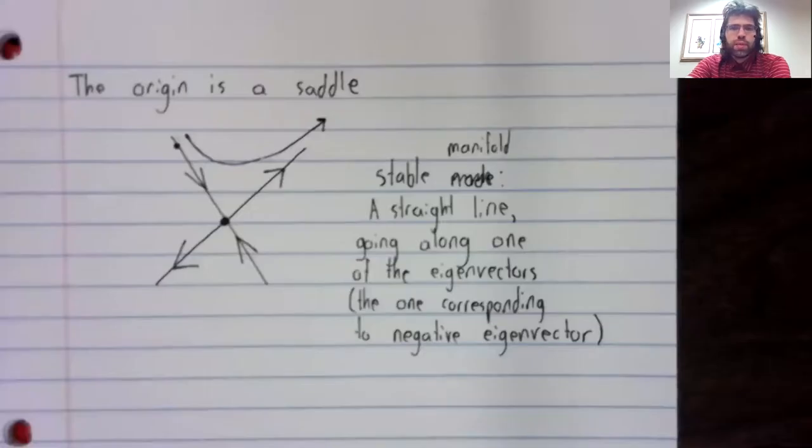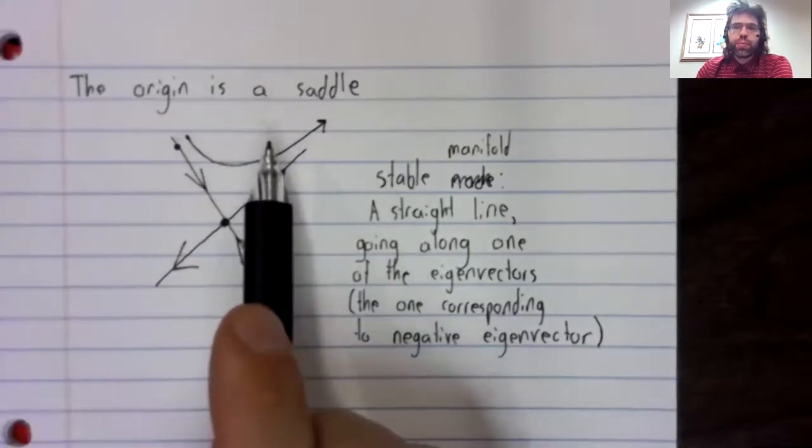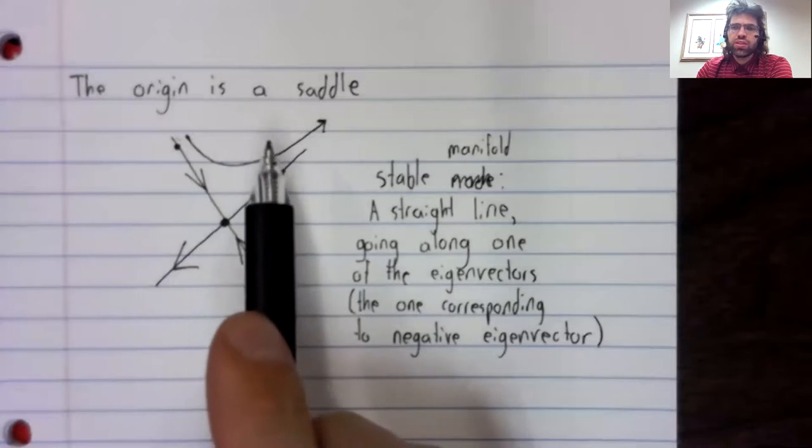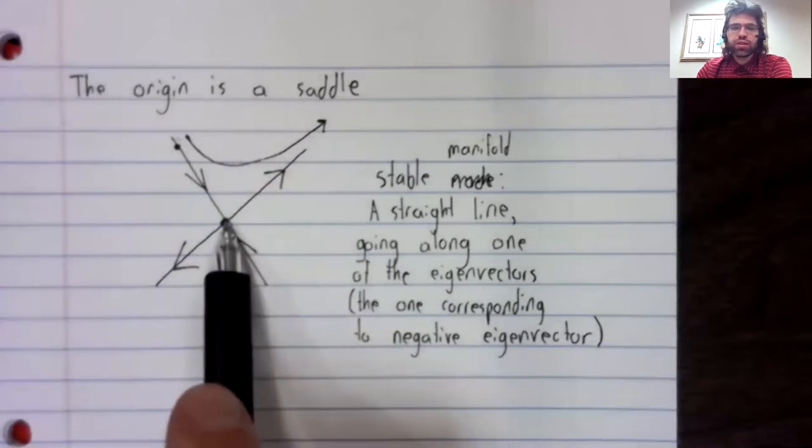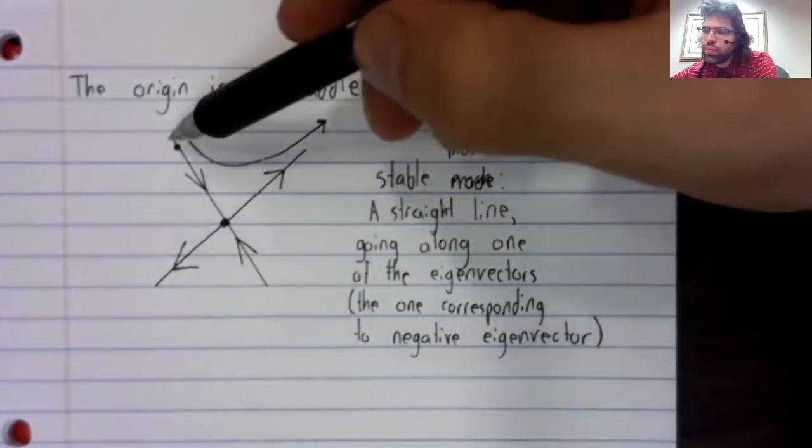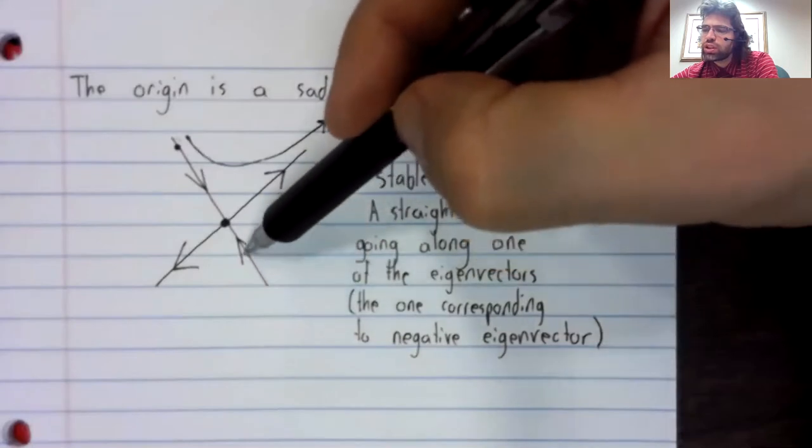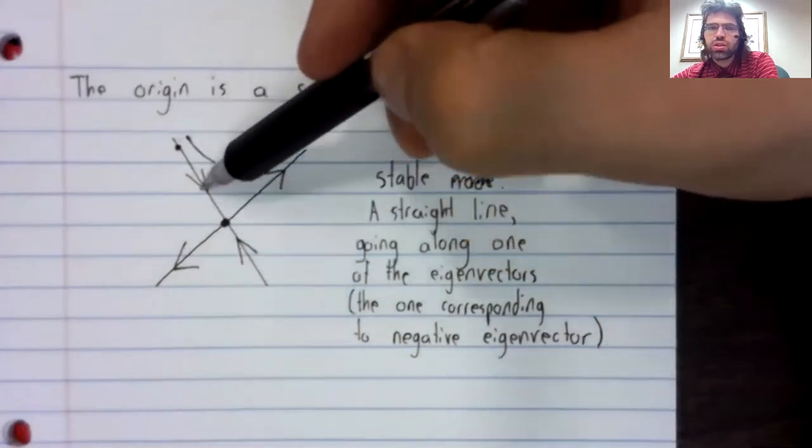The stable manifold of a saddle in this situation where we have a linear system, we're looking at the origin. The stable manifold of the saddle is all of the points in a certain straight line.